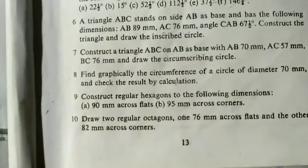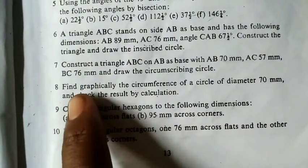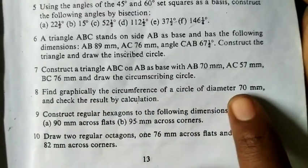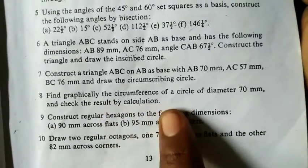Good day everyone, my name is Graphics. The next question we'll be doing today is to find the circumference of a circle using graphical method. The diameter is given to be 70. Now if you look at this number 8, it says find graphically the circumference of a circle of diameter 70 mm and check the result by calculation.